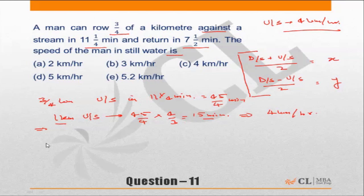Similarly, on the return leg it is taking 7 1/2 minutes. So 3/4 kilometer downstream is done in 7 1/2 or 15/2 minutes, which implies 1 kilometer downstream will be covered in 15/2 times 4/3.